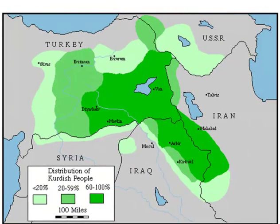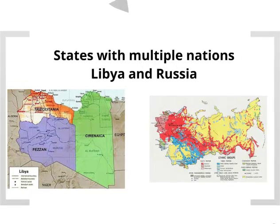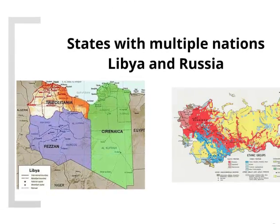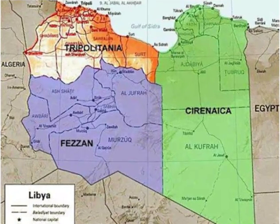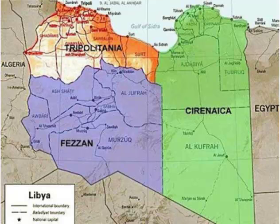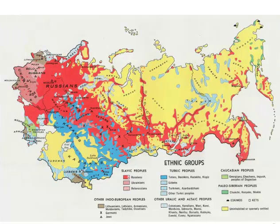In the area that the Kurds would like to turn into Kurdistan, they are a majority, with dark green indicating 60 to 100 percent of the population. Another common disconnect between states and nations is a situation where states have multiple nations within them. This can be a very important political issue — for example, Libya has three distinct nations living within the same political boundaries, raising questions about what kind of government will emerge. Russia also has hundreds of nations living within its boundaries, which can cause great conflict.